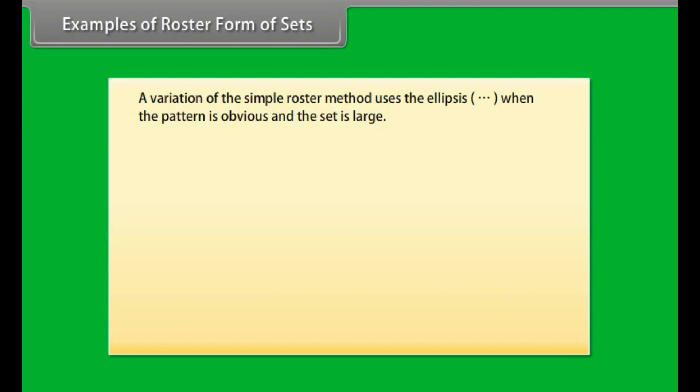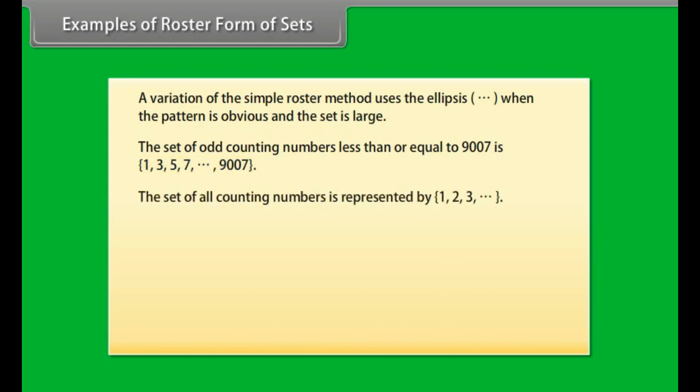The set of odd counting numbers less than or equal to 9007 is {1, 3, 5, 7... up to 9007}.